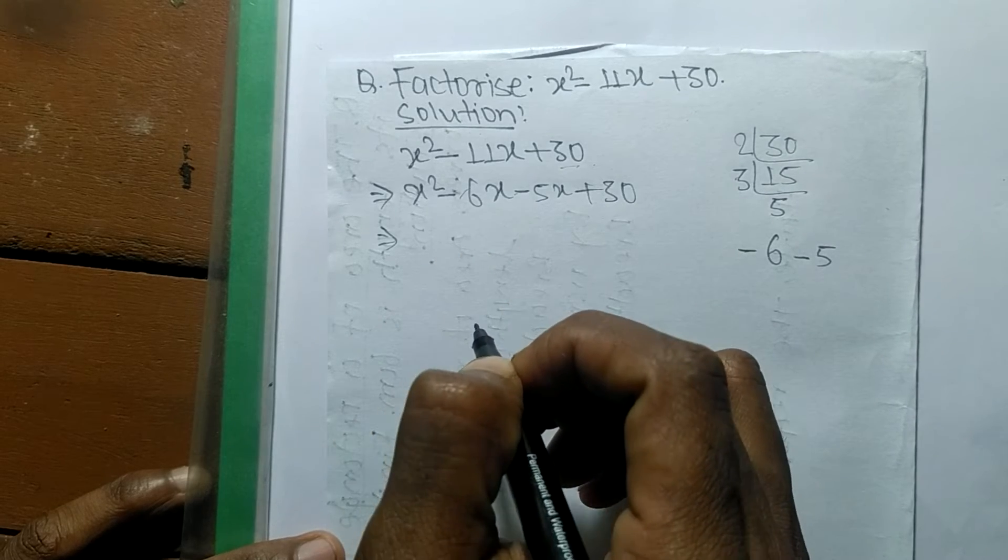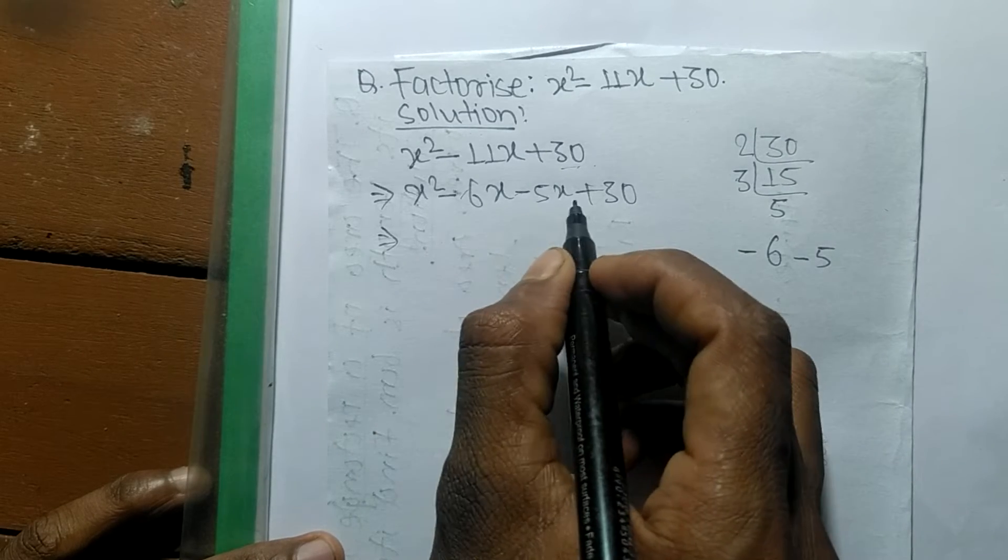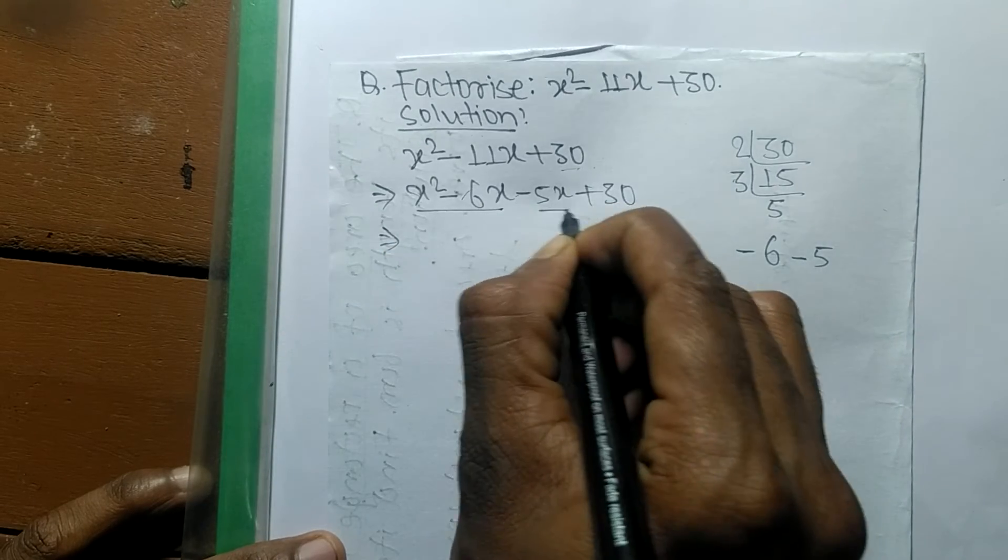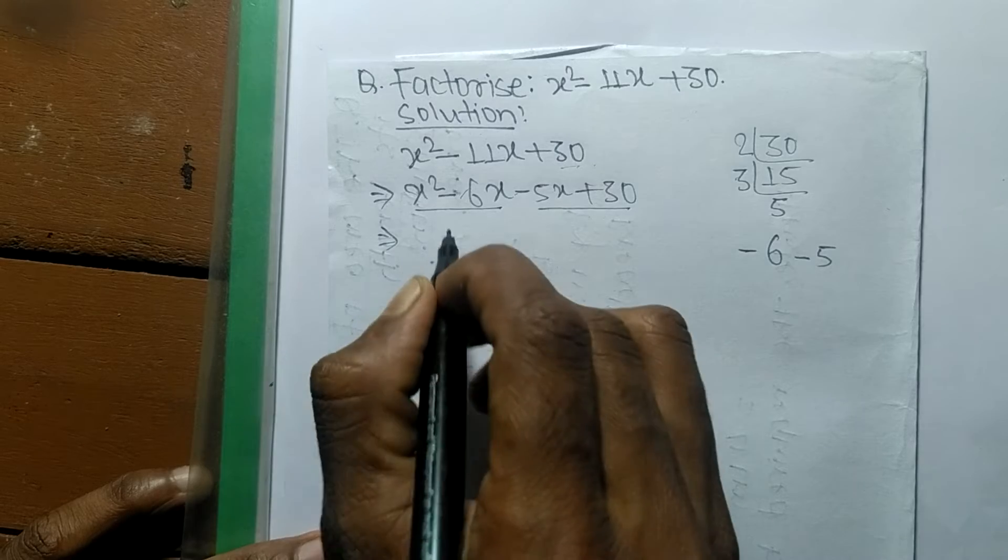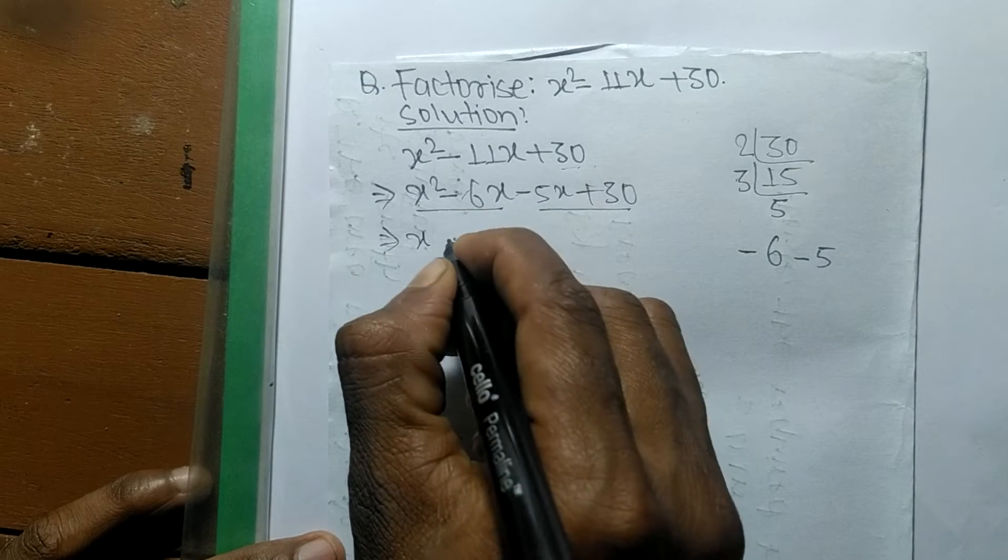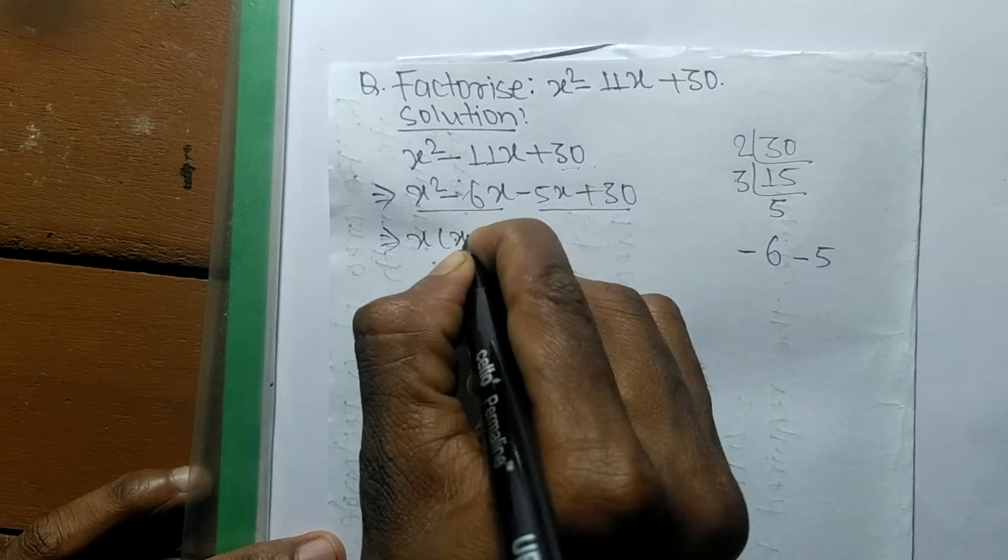Now we have to separate these expressions into two pairs. In the first pair, the common factor is x, so the remaining is x minus 6.